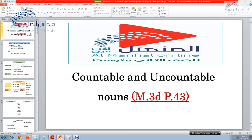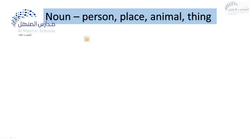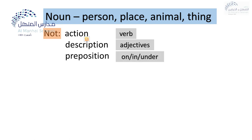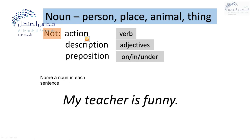Countable and uncountable nouns. What do we mean by countable and uncountable nouns? The noun is concerning with the person, place, animal and thing. So it's not an action or description or even a preposition. Because action concerns the verb, description concerns adjectives, and prepositional like on, in or under.